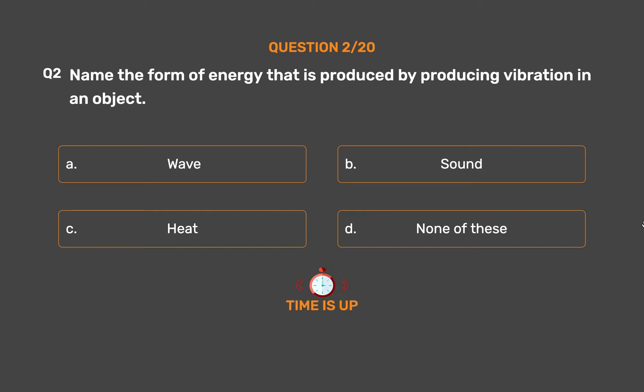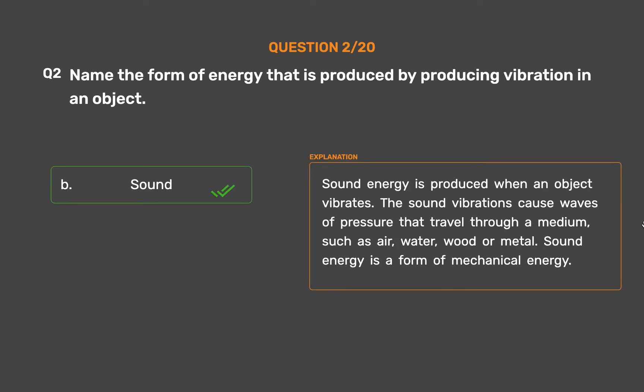The correct answer is Option B, Sound. Sound energy is produced when an object vibrates. The sound vibrations cause waves of pressure that travel through a medium such as air, water, wood, or metal.